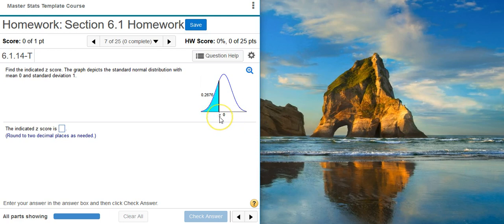Notice the indicated z-score lies to the left of 0. That means the z-score we're looking for is negative. We're also given the area underneath the curve that's bounded by that z-score that we're looking for.